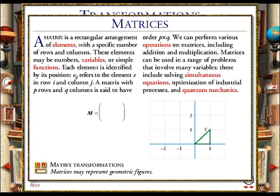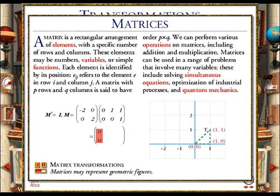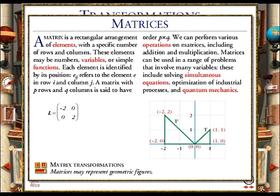We can write the coordinates of the vertices of the triangle T as the matrix M: 0,0, 1,0, 1,1. Multiplying M by the matrix L produces the matrix M prime. The elements of M prime give the coordinates of the vertices of a new triangle T prime: 0,0, minus 2,0, minus 2,2. So the matrix L represents a reflection in the y-axis, and an enlargement, scale factor 2, about the origin.